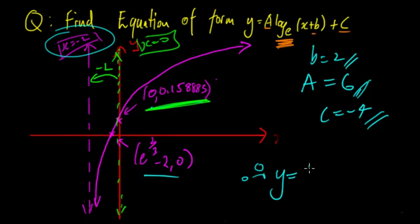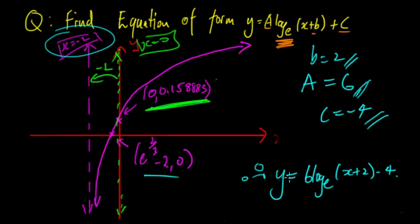So a = 6, c = -4, and b = 2. Therefore the equation is y = 6·log_e(x + 2) - 4. You can check this — with this equation, those two points and that asymptote are confirmed when you graph it.